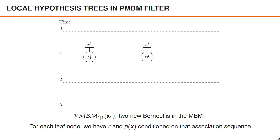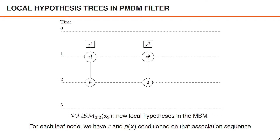At time one the posterior density contains two Bernoullis with a single local hypothesis each. We have initiated one Bernoulli for each of the two measurements in this time step. There is no measurement at time two, so for each local hypothesis at time one we get a single local hypothesis at time two.